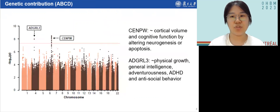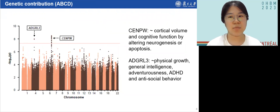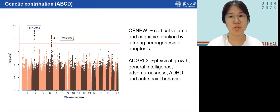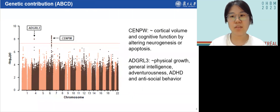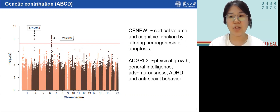Two loci showed genome-wide significant effects. One locus was located in CNPW, related to cortical volume and cognitive function by altering neurogenesis and apoptosis. Another locus was located in ADGRL3, implicating neuroguidance and associated with intelligence, adventurousness, and ADHD.